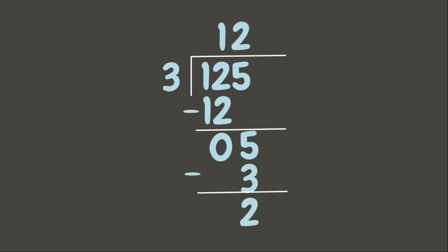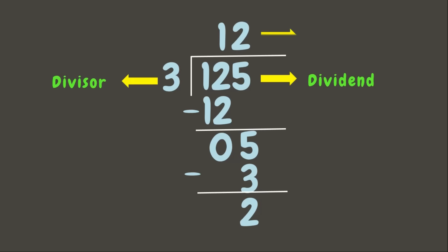In our long division method, the number we find inside is the number being divided, which is the dividend. The number we put outside is the number that divides the dividend, which is the divisor. Our answer is on top, which is the quotient, and the number below is the remainder.